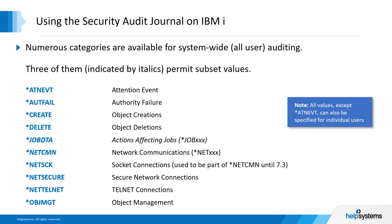There are lots of different categories of event types we can track at a system-wide level. Values shown in italics can be broken down into subsets — for example, *JOBDTA can be broken into entries beginning with *JOB, so if job data is collecting more than you're interested in, you can specify just the subsets. All of these values, with the exception of the attention event, can also be specified at an individual user level. The attention event can't be specified per user because it's logged by the operating system's intrusion detection/prevention system and isn't specific to any particular user — it covers things like denial of service.